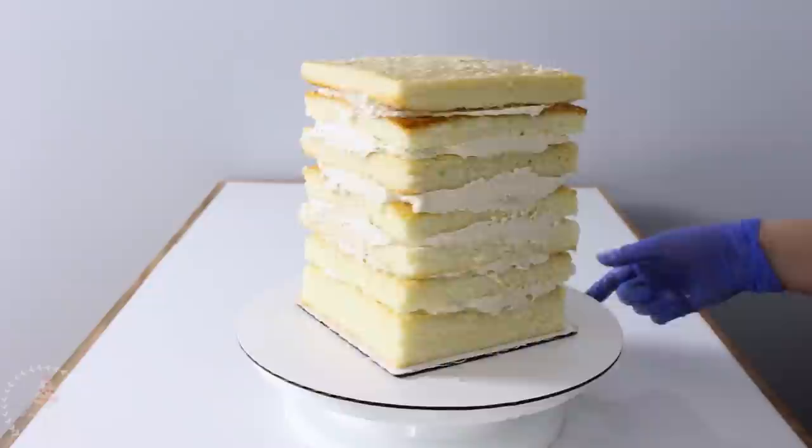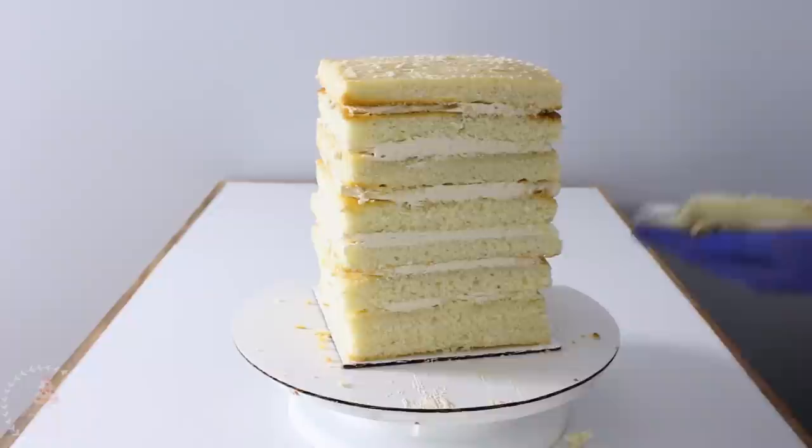With my serrated knife I'm just going to go around and take a little bit off the sides because I want to make sure there's a small gap between the cake and the edge of that cake board.